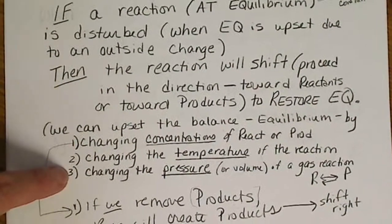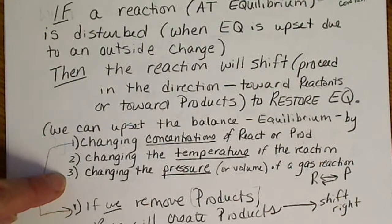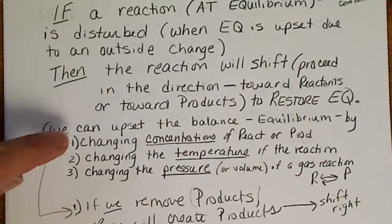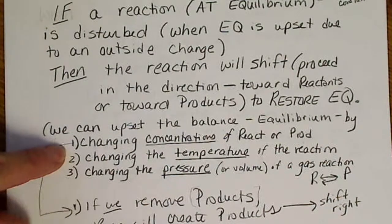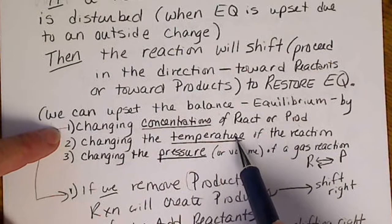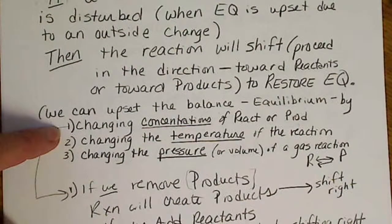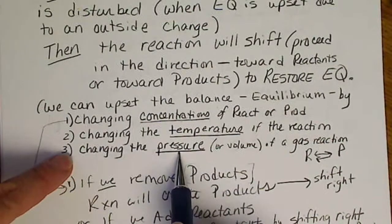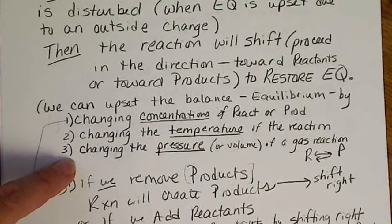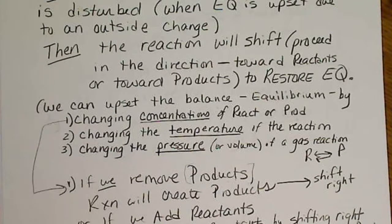These three things — concentration, temperature, and pressure — are easy things to change. Concentration and temperature can be thought about similarly, as long as we treat heat as either a reactant or a product. For a pressure change, we have to consider only the moles of gas and realize that fewer moles of gas will cause less pressure on the system.